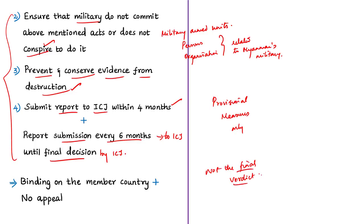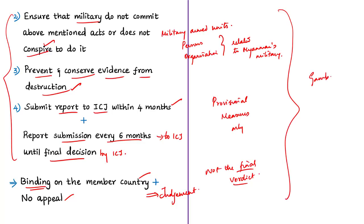A question arises whether ICJ judgments are binding. The ICJ's judgments have binding force and there is no appeal for parties involved in a particular case. Therefore, it is the legal responsibility of the Myanmar government to take the indicated measures and prevent the Rohingyas from further abuse and torture. These are the events at the ICJ based on the allegations made by Gambia against Myanmar, and based on these events, this editorial was written.